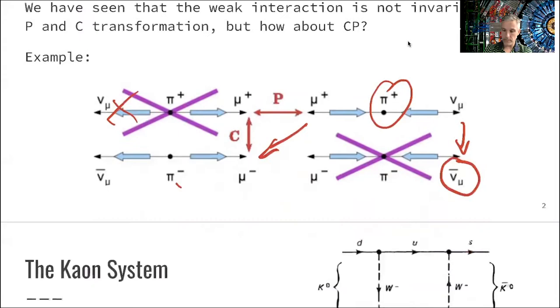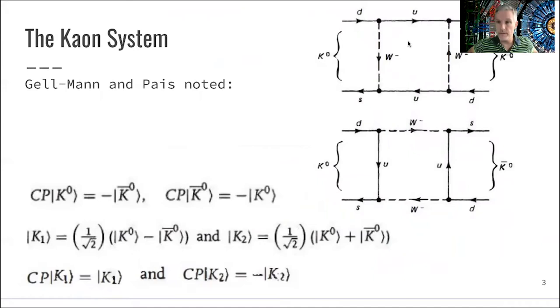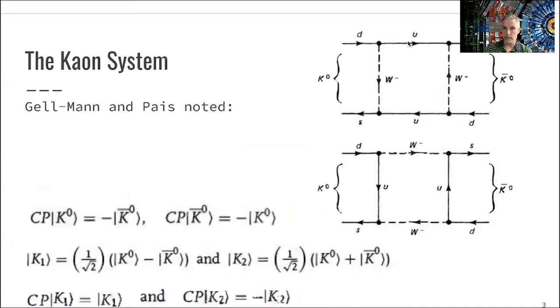Gell-Mann and Pais noted that in systems of neutral kaons, there is an odd effect. The effect is that a particle, a K0, can turn into an antiparticle by changing the strangeness.